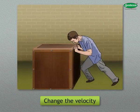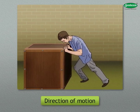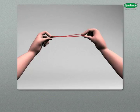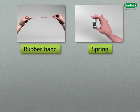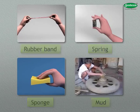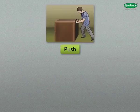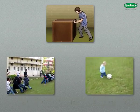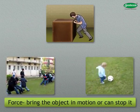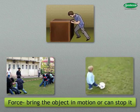Force can also be used to change the velocity of an object or direction of motion. Force can also change the shape of a body. When we apply a force on a rubber band, spring, sponge or mud, the change in shape can be observed. When we push, pull or hit an object, we make a force act on them, due to which we can bring the object in motion or can stop it.